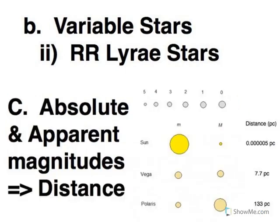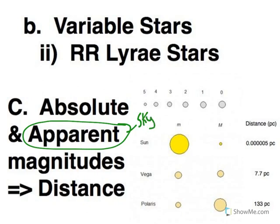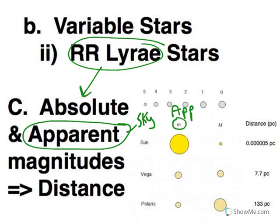Of course, the final step is always to compare that with the apparent magnitude. Apparent magnitude is what we get by looking in the sky — how bright does it appear to be. If it's an RR Lyra, that automatically gives you the absolute magnitude, and then we're back to comparing apparent and absolute magnitudes to get the distance.